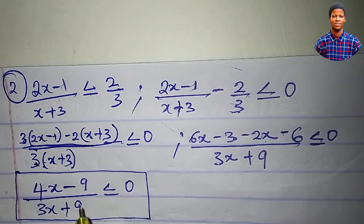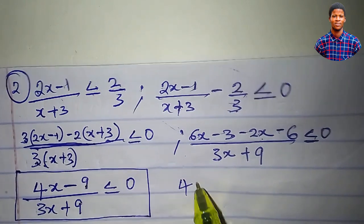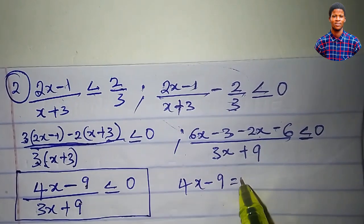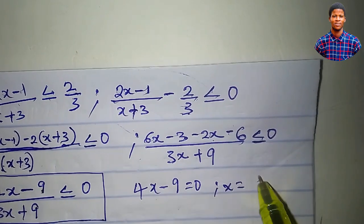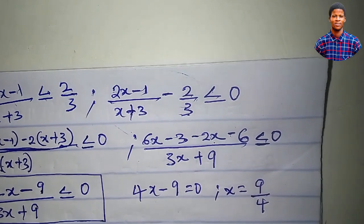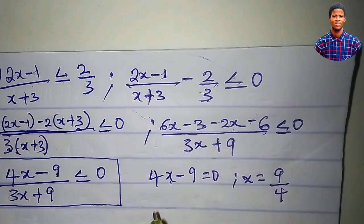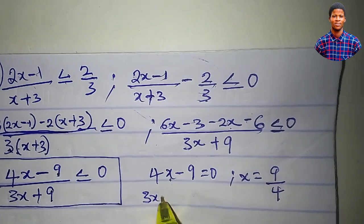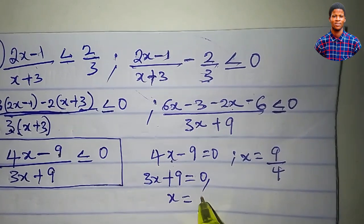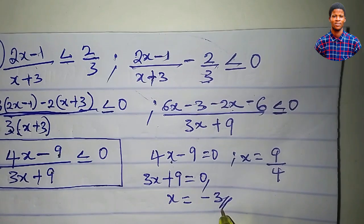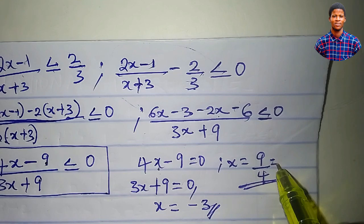Now we'll set both numerator and denominator to 0. From 4x minus 9 equal to 0, making x the subject, we get x equal to 9 over 4. From 3x plus 9 equal to 0, we get x equal to minus 3. Note that 9 over 4 is equivalent to 2.25.